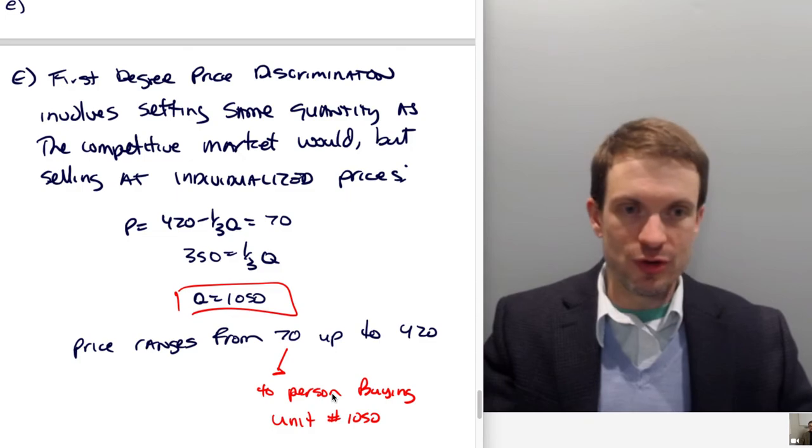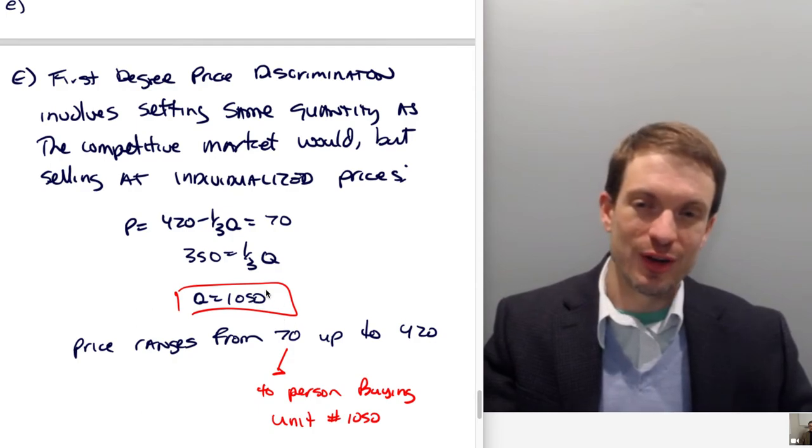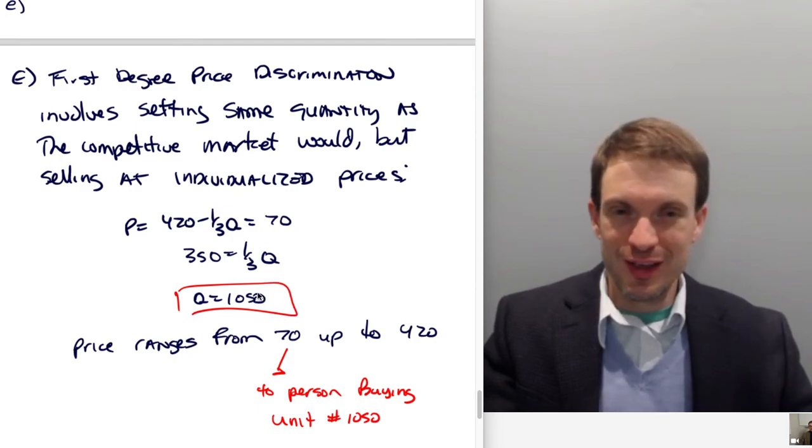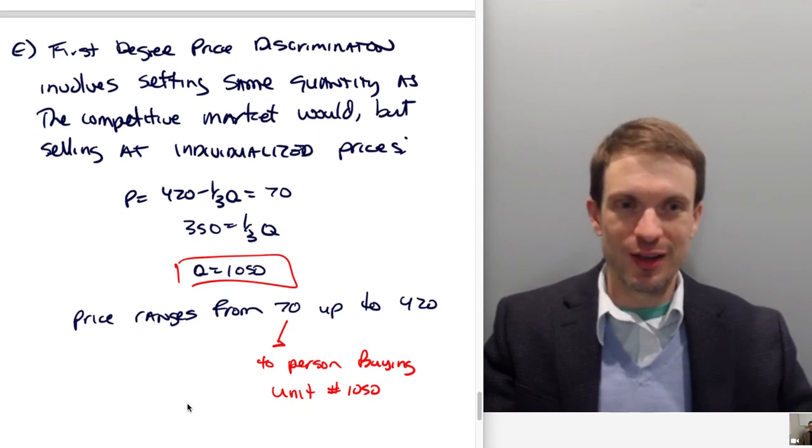That's first-degree price discrimination. If you draw the picture, you'd see the entire value added, the entire economic surplus—the area under the demand curve and above the cost curve—would be producer surplus, not consumer surplus. We'd produce the competitive quantity, but we'd fully extract surplus using this pricing strategy. We'll conclude here.